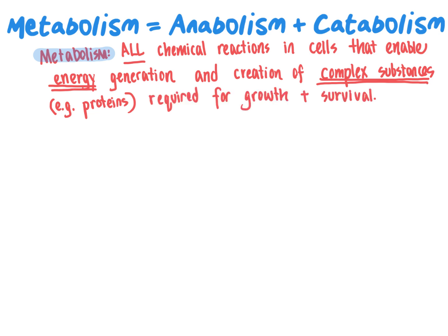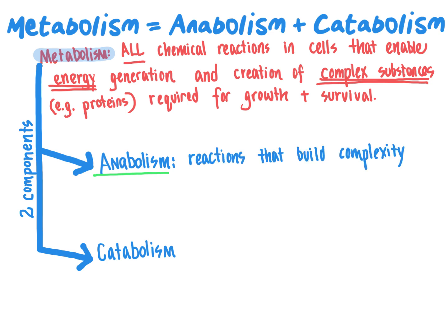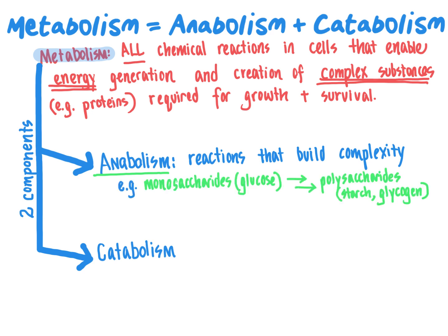We break metabolism into two components: anabolism and catabolism. Anabolism refers to chemical reactions that build complexity — they take simple materials such as glucose and join those molecules together via covalent bonds to form more complex molecules such as glycogen, starch, and other complex carbohydrates that are used to store energy within the body. Similarly, amino acids link together to form peptides or proteins.